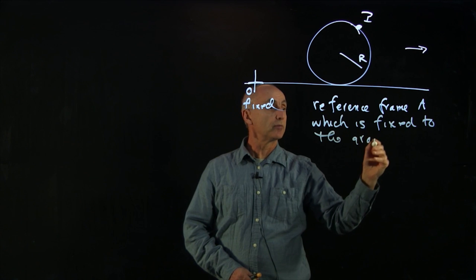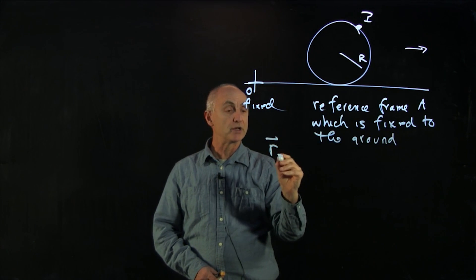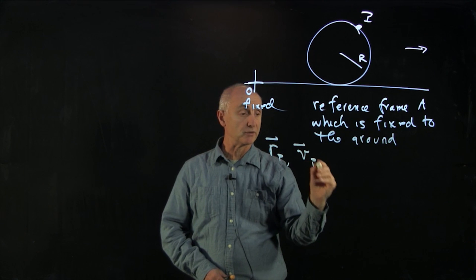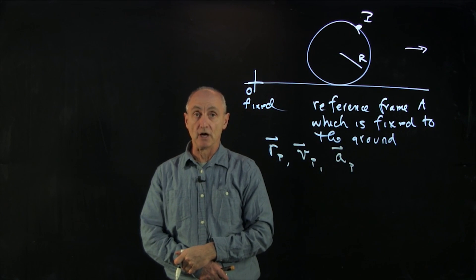And I would like to consider my problem is to find both the position of the point on the rim, the velocity of the point on the rim, and the acceleration of the point on the rim as a function of time.